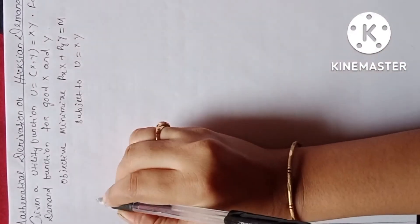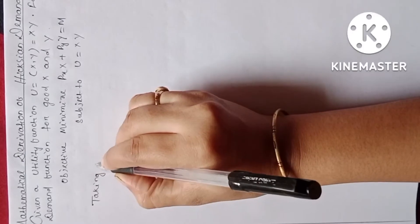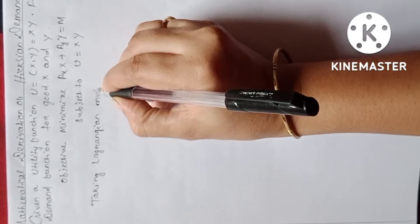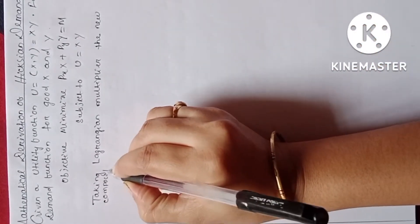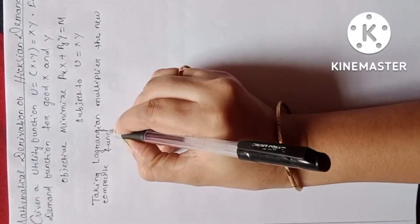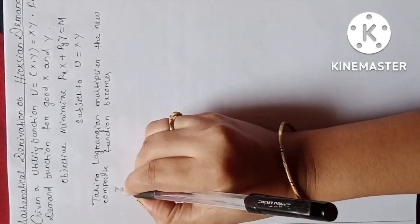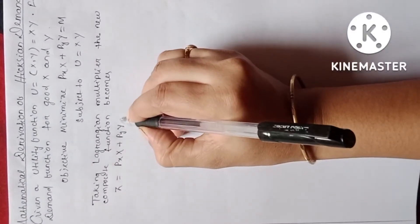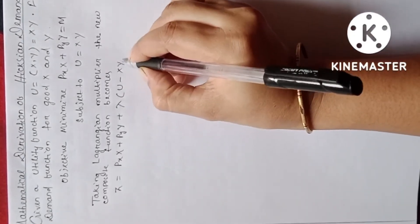Taking the Lagrangian Multiplier, the new composite function becomes Z equal to PX·X plus PY·Y plus Lambda times (U minus X·Y).